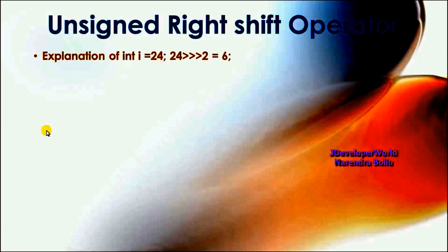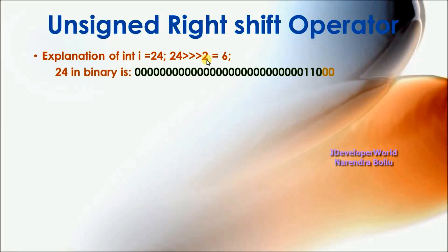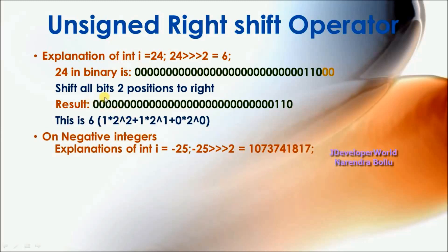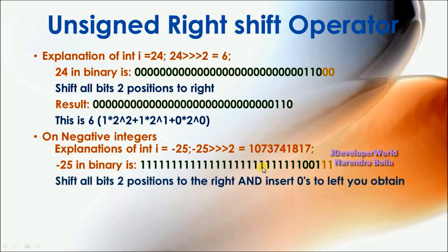Unsigned right shift operator. I have i equal to 24. I am using the unsigned right shift operator for 2 bits. The result is 6. In binary format, we represent 24 like this. If we move 2 bits to the right side, it will replace the leftmost bits with zeros. For negative integers, the unsigned right shift operator does not preserve the leftmost bits — it always replaces them with zeros. So for minus 25, if you do unsigned right shift by 2 bits, you shift all 2 positions to the right and insert zeros on the left.